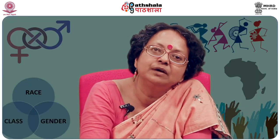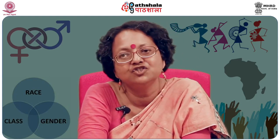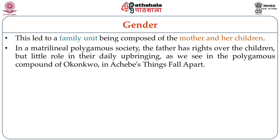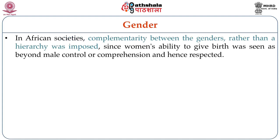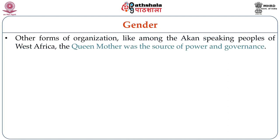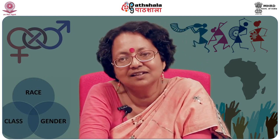This kind of polygamous compound in an Igbo family is seen in Chinua Achebe's chief protagonist Okonkwo's household in Things Fall Apart. The role of the father is thus not the same as that of the patriarch of a monogamous Christian family, where the father controls the lives of the family. In African societies, complementarity between genders rather than a hierarchy was imposed. Since women's ability to give birth was seen as beyond male control, it gave women additional mysterious and often ambiguous powers. Other forms of organization also existed: among the Akan-speaking people of West Africa, the entire state is ruled not by the king but by the queen mother, who was the source of power and governance.